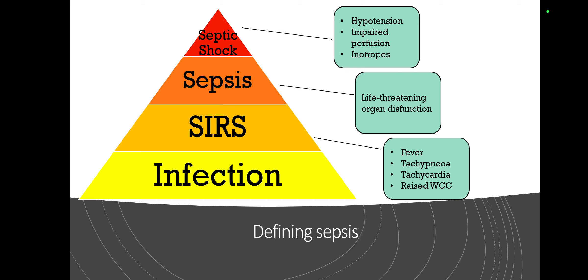If the child develops respiratory failure, hypotension, or renal shutdown, we're getting into sepsis. But if you've got a combination of hypotension, impaired perfusion, needing inotropes, or needing support to multiple organs, then you're definitely in a state of septic shock. These are the most concerning zones, and that's why we're having this talk.